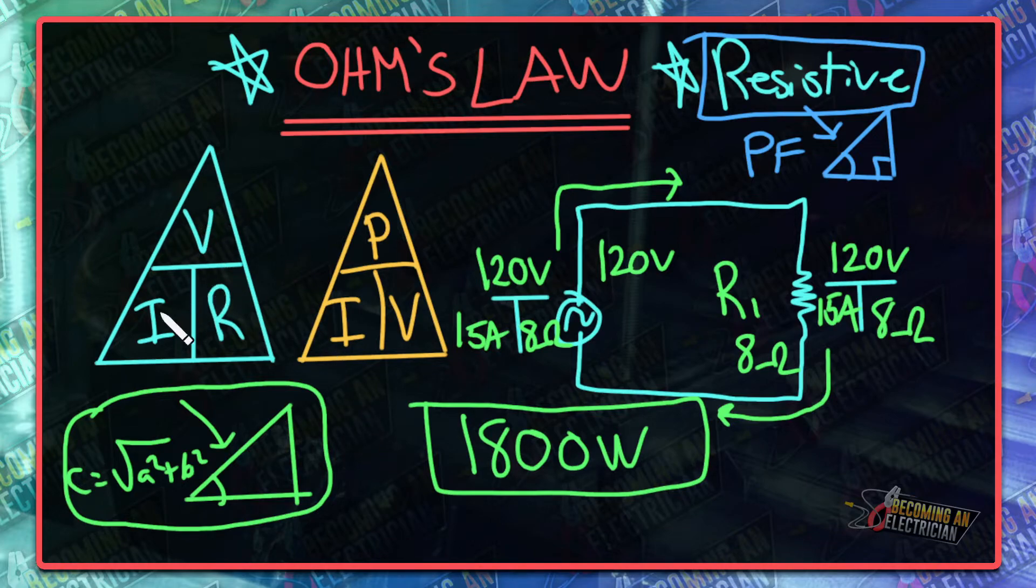This is Ohm's Law. Whenever you want to find a value—since voltage is up top, we just divide either resistance or current to find each other. If we want to find voltage, we just multiply. If you just put your T, you will always find your answer. Then if you want to start finding your power, it gets to that.